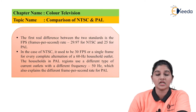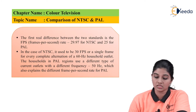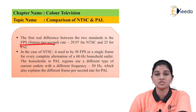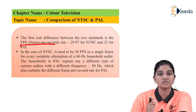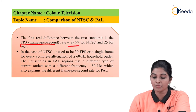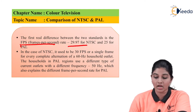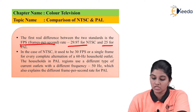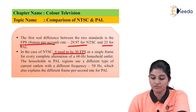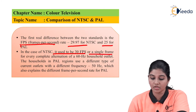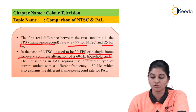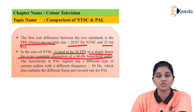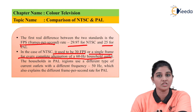The first real difference between NTSC and PAL is the frames per second rate. In case of NTSC it is approximately 30, but the actual value is 29.97. NTSC uses 30 frames per second, or a single frame for every complete alternation of the 60 hertz household outlet — that means if the power line frequency is 60 hertz, it uses 30 frames per second.